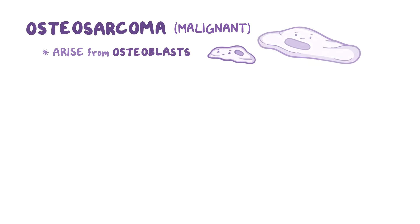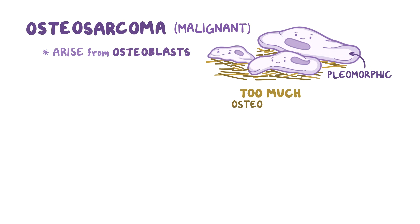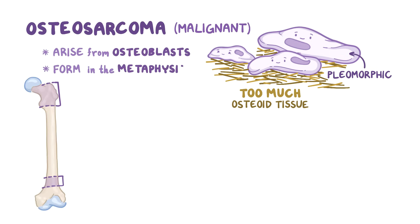Among malignant tumors, the most common one is osteosarcoma. Osteosarcomas arise from osteoblasts of different sizes, called pleomorphic, and these cells produce too much osteoid tissue. Osteosarcomas often form in the metaphysis, where there's a lot of cell division occurring, and most commonly affect adolescents.